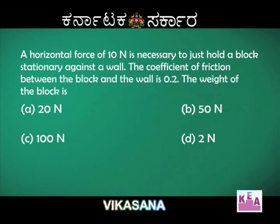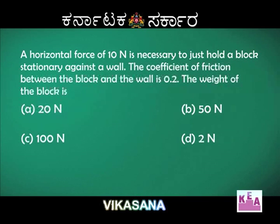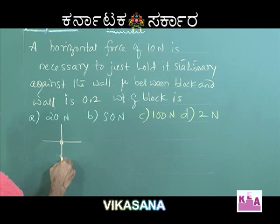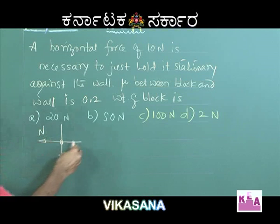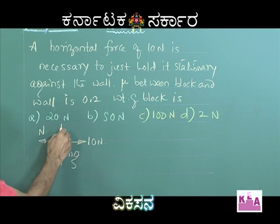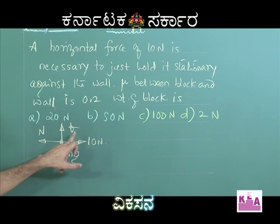Here is one more problem on friction. A horizontal force of 10 newtons is necessary to just hold a block stationary against the wall. The coefficient of friction between the block and the wall is 0.2, and the weight of the block is to be found. In the free body diagram, the weight acts vertically downwards, the normal reaction of the wall acts horizontally, the applied force of 10 newtons pushes the block against the wall, and friction acts vertically upward to prevent the block from falling.